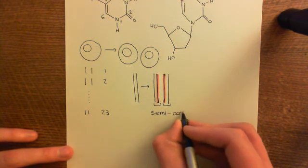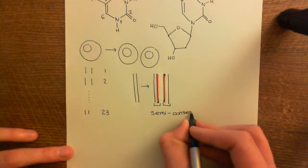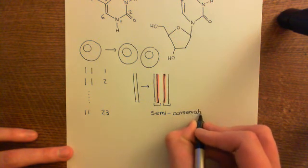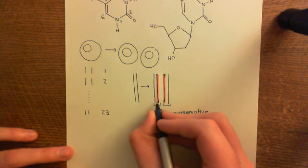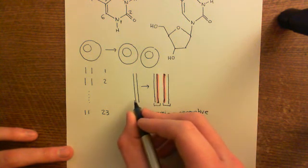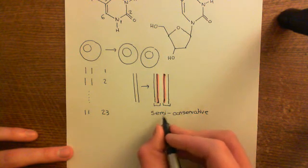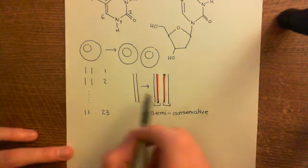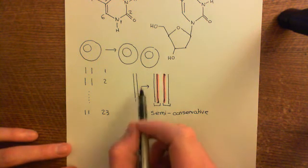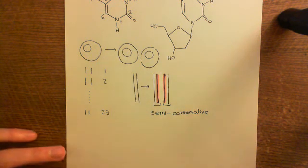It's called that because if you look at these two new strands, half of each of the new strands is made up of the old stuff. That's why it's semi-conservative—because at least half of it is conserved from the original double strand of DNA.